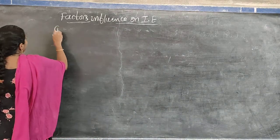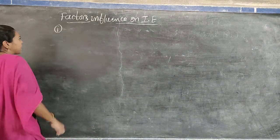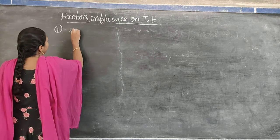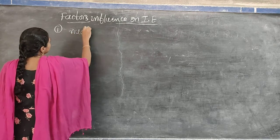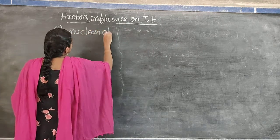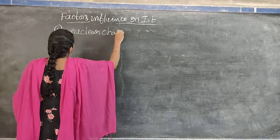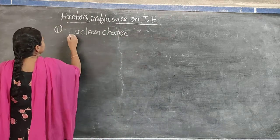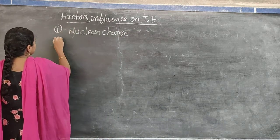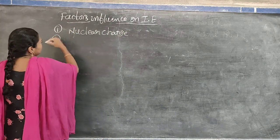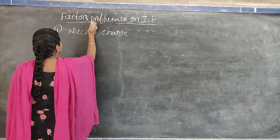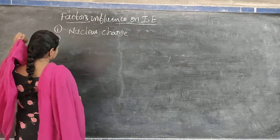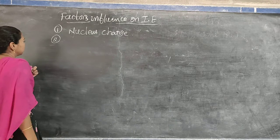How many factors influence IE? The factors are: first, nuclear charge; second, stable configuration; third, atomic size; fourth, penetration power of the orbitals; and fifth, the screening effect or shielding effect.